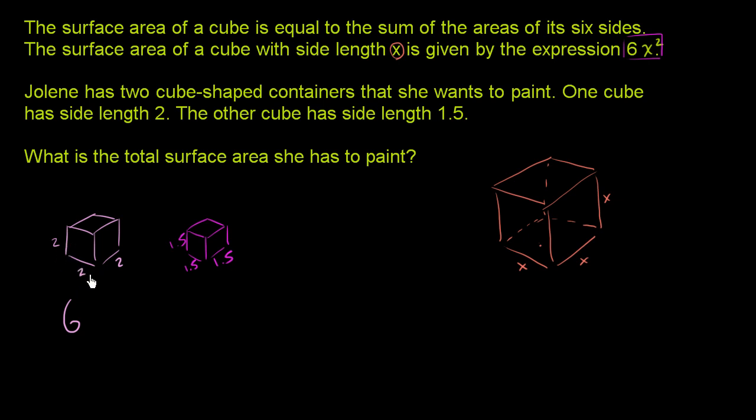And the cube all has the same dimensions. So its length, width, and depth is all the same. So for this cube, the surface area is going to be 6 times 2 squared. So it's going to be 6 times 2 squared.